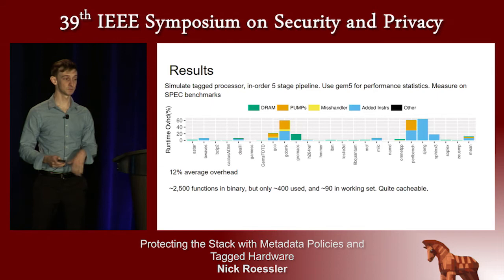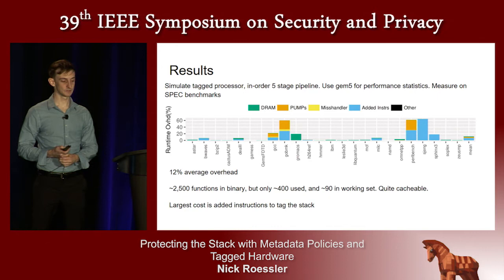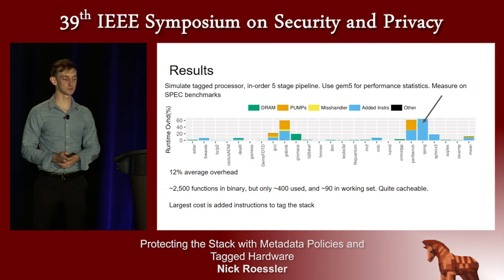This means the rules are quite cacheable. We encounter function foo, cache all the rules we need for foo, and the next time we see foo we already have those rules cached and don't need to consult the policy software. The largest cost, shown in blue, is the instructions added to tag and then clear stack memory. Looking at Strang, we can see a quite large overhead — about 60% — just for this one source of overhead.